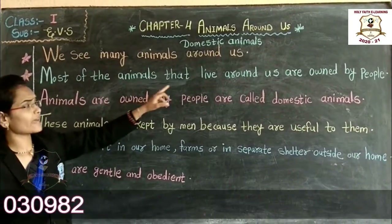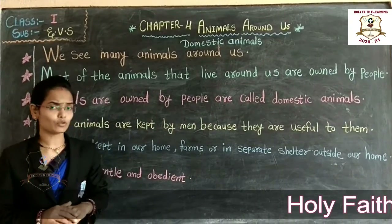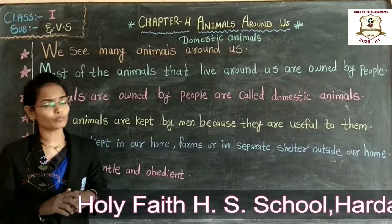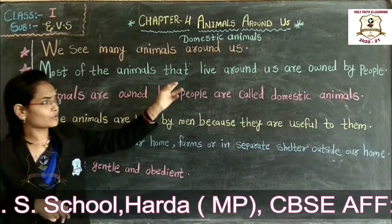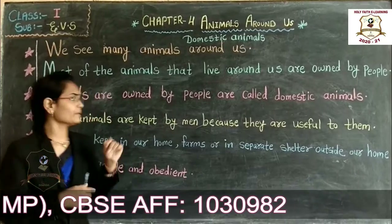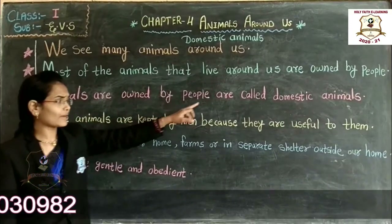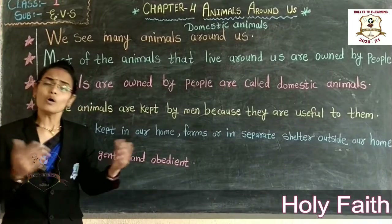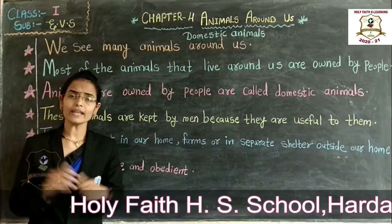Most of the animals that live around us are owned by people. They are part of the village. Animals are owned by people — these are called Domestic Animals.